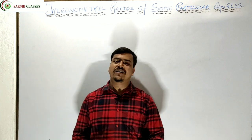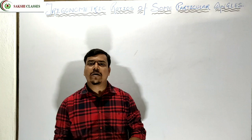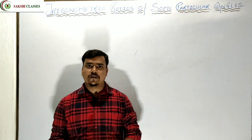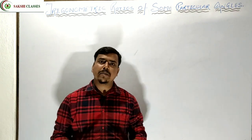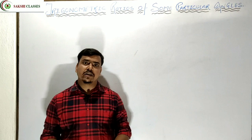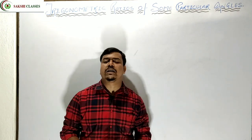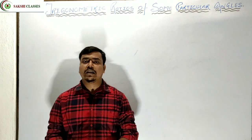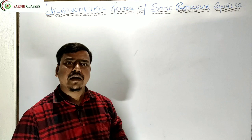Hello everyone, today we are going to start a new chapter of trigonometry — trigonometric ratios of some particular angles. In this chapter we are going to study the values of some specific angles such as 0 degree, 30 degree, 45 degree, 60 degree, 90 degree. Since we are going to class 10, we will learn all these values using a trigonometric table.